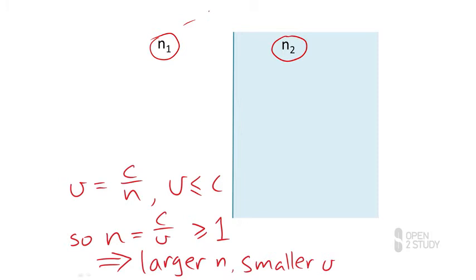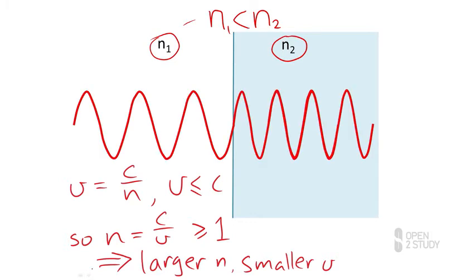We're going to say here that N1 is a smaller number than N2. That is, my wave moves faster in the left-hand side of the screen than it does on the right-hand side of the screen. Let's draw a wave here and see what actually happens.